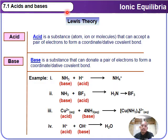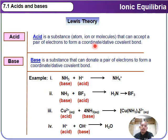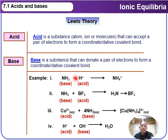Next, we move to the Lewis theory of acids and bases. The Lewis theory states that an acid is a substance — an atom, ion, or molecule — that can accept a pair of electrons to form a coordinate, or dative covalent bond, as studied in Chapter 5 Chemical Bonding. A Lewis base is a substance that can donate a pair of electrons to form a coordinate or dative covalent bond. For example, NH₃ is the base and H⁺ is the acid, accepting a lone pair from NH₃ to form the ammonium ion, NH₄⁺.